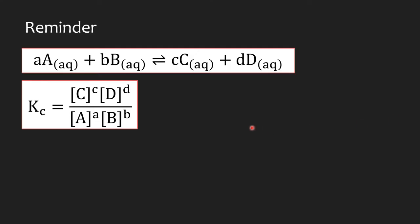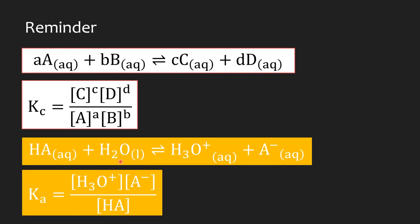As a reminder from the previous chapter, if we have a general chemical equation with A and B as reactants and C and D as products, we can write the equilibrium constant K equal to the concentrations of C and D divided by the concentrations of A and B, each raised by their stoichiometry coefficient. In this chapter we look at the equilibrium of acid ionization in water.